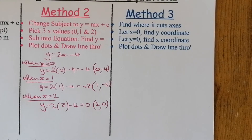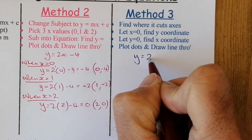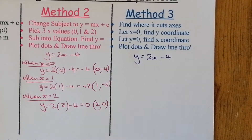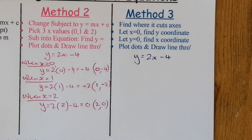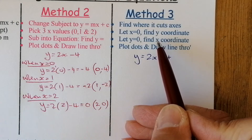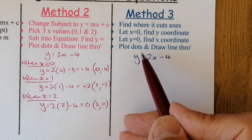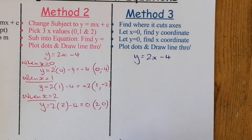Method 3 is useful — including later when working with curves — for finding where a line cuts the axes. The approach: let x equal 0 to find the y-coordinate, then let y equal 0 and solve for the x-coordinate. You then have two points where the line cuts through the axes, plot the dots, and draw the line. Sometimes numbers come out as fractions, which can be a bit awkward.